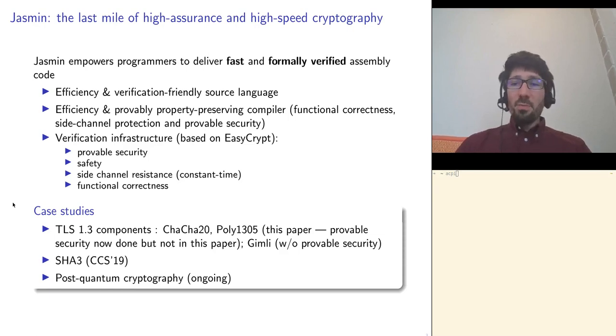Together with the language, we provide a compiler that is certified, like the CompCert compiler. We have a proof in Coq that it preserves the behaviors of the Jasmin programs. Also, the programmer has access to rich verification infrastructure based on EasyCrypt. This enables proving formal security of the implementations, but also their safety, their resistance against side-channel attacks, and their functional correctness.